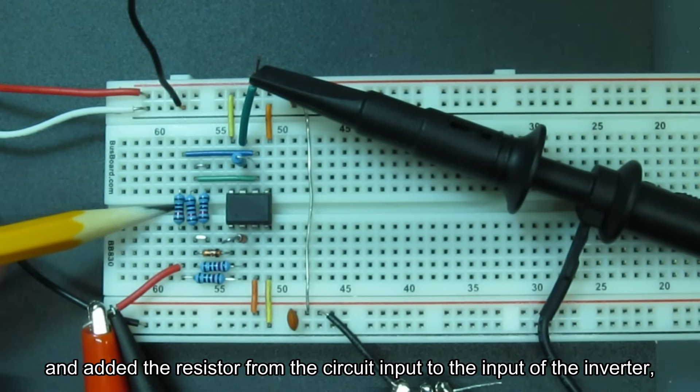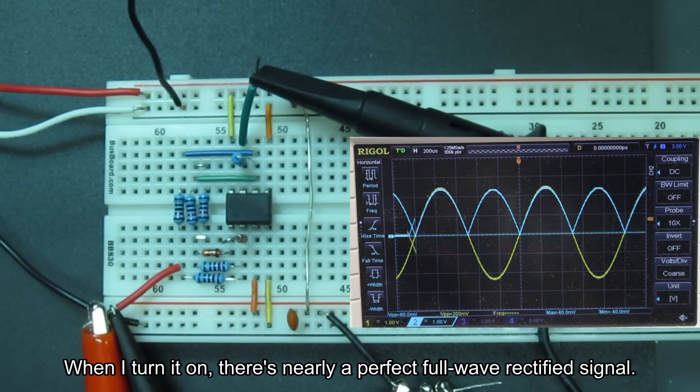Here it is on the breadboard. I've added a second 10k feedback resistor in parallel with the first, and added the resistor from the circuit input to the input of the inverter, which is now an adder. When I turn it on, there's nearly a perfect full-wave rectified signal. I'll boost the frequency to 20kHz again.